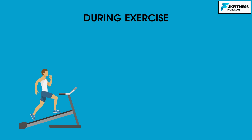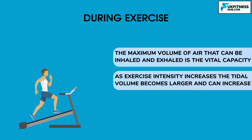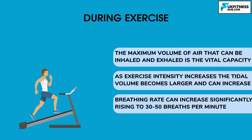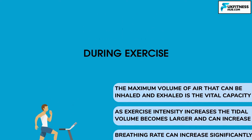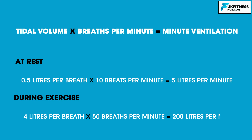During exercise, the amount of air we breathe in and out and the number of breaths we take increase significantly. The maximum volume of air that can be inhaled and exhaled is the vital capacity, and as exercise intensity increases, the tidal volume becomes larger and can increase until vital capacity is reached. Breathing rate can also increase significantly, rising to 30 to 50 breaths per minute depending on the intensity of exercise. If tidal volume were to increase to 4 litres per breath and breathing rate to 50 breaths per minute, minute ventilation is increased to 200 litres per minute.